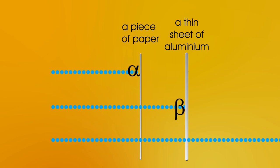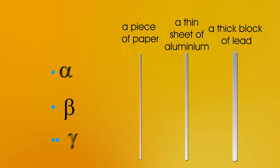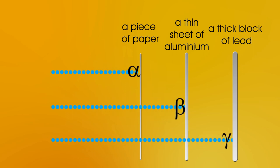Next, we need to try and stop the gamma. We need something very dense or very thick. In fact, we find we either need several centimetres of lead or a few metres of concrete to completely stop gamma. So let's just put in a few centimetres of lead. Yep, we can see that stopped the gamma.